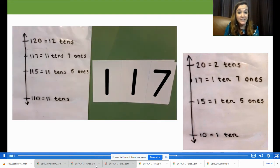Use a complete sentence to tell me what 117 rounded to the nearest 10 is. 117 rounded to the nearest 10 is 120. Now tell me in unit form using tens and ones. 11 tens, seven ones rounded to the nearest 10 is 12 tens.